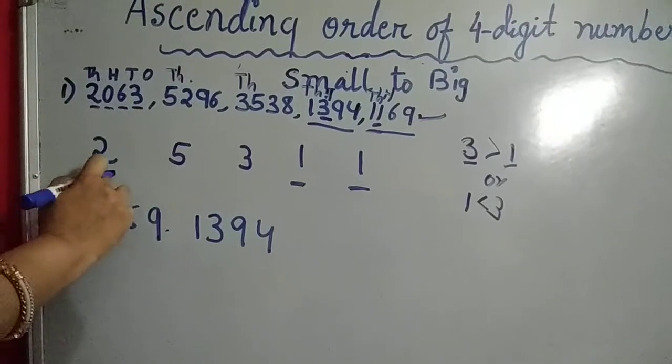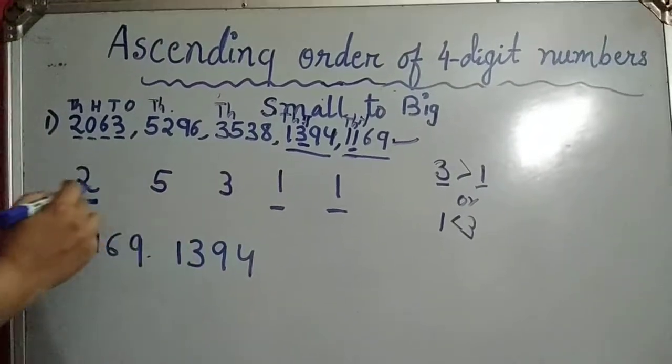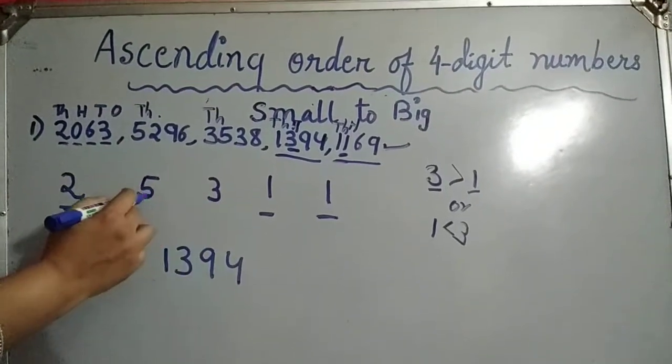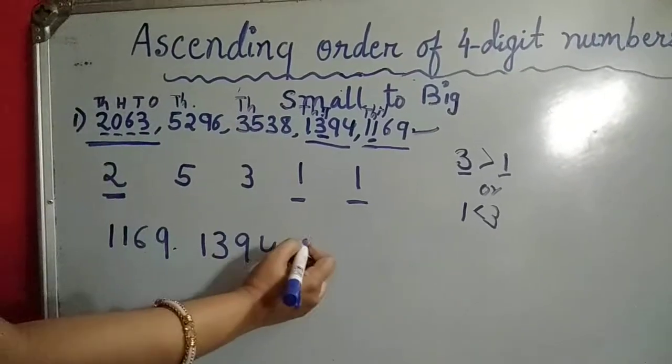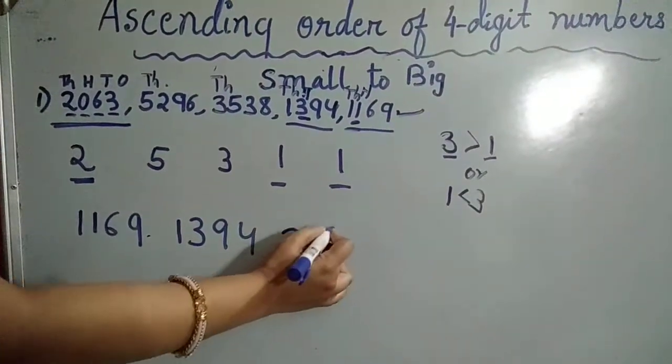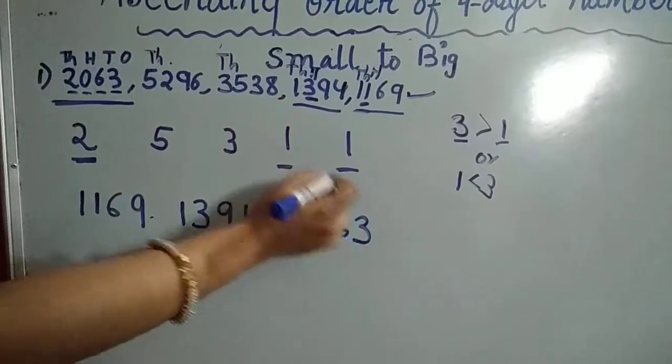Then we have two. Obviously two is less than three and also less than five. So the number starting with two is 2063. We will write 2063 as the next biggest number.